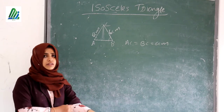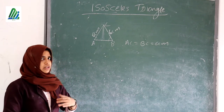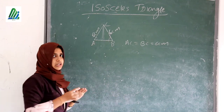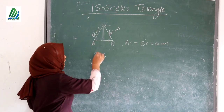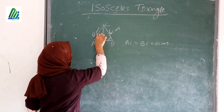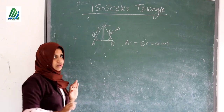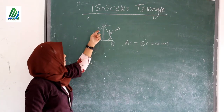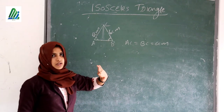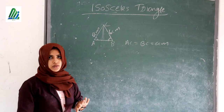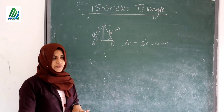As we learned previously, if two sides are equal then the angles opposite to the equal sides are also equal. Here, since AC and BC are equal, angle A and angle B are also equal.